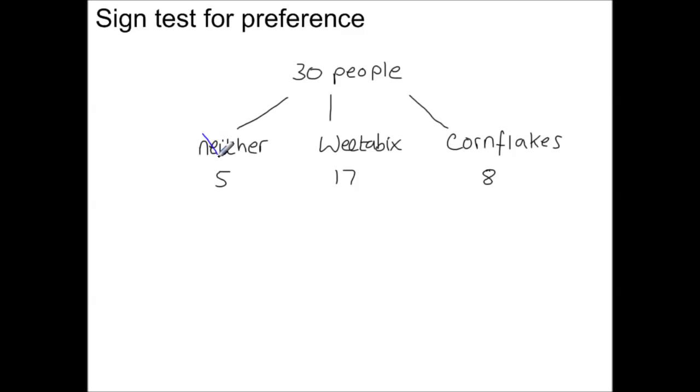So those who chose Neither, well, they don't really tell us anything, so ignore them. 17 were in favour of Weetabix, and 8 are against. So the smaller of the two values, which is 8, becomes our test statistic. And we can use the binomial distribution with a probability of 0.5 to carry out a Sign test. And the number of trials here will be 17 plus 8. So 25. So ignore those which were neither. Leave those out. And from here onwards, we have our test statistic. You've got your binomial distribution. You carry out the Sign test as per normal.